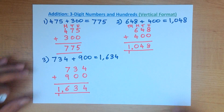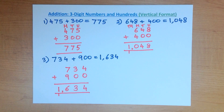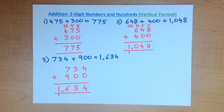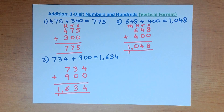Nice and easy — nothing difficult in any of that. So that is the addition of three-digit numbers and hundreds using the vertical format.